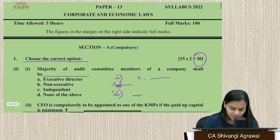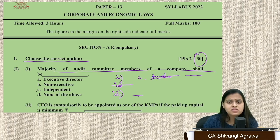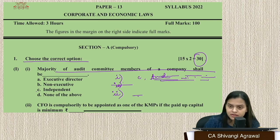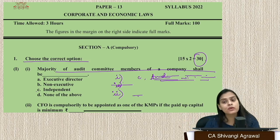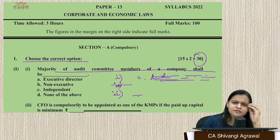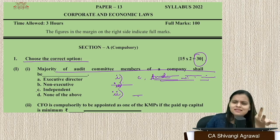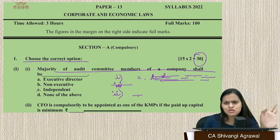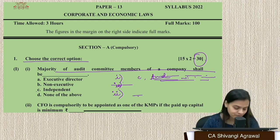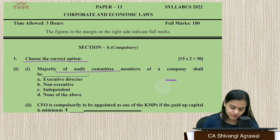For example, if the question asks 'Majority of audit committee members of a company shall be', you can simply write: 'Audit committee is required in listed companies and other prescribed companies, with at least three directors, with independent directors forming a majority.' That takes just a few seconds. Do that for questions you know. If you're just guessing, leave it. This is the approach you should follow.